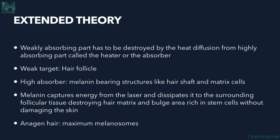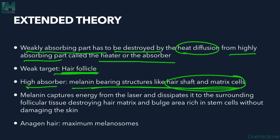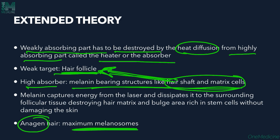The extended theory states that a weakly absorbing part has to be destroyed by heat diffusion from a highly absorbing part called the heater or absorber. Here, the weak target is the hair follicle, whereas the high absorber is the melanin-bearing structures like the hair shaft and hair matrix. These structures absorb the laser light to a higher extent and diffuse their energy through heat to the hair follicle, destroying it. Also notable is that anagen hairs have the maximum number of melanosomes, so laser hair removal works most effectively in the anagen phase, not in catagen or telogen.